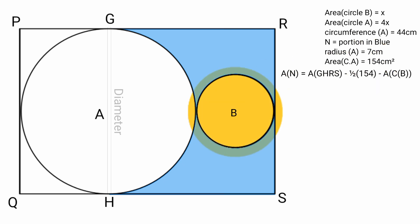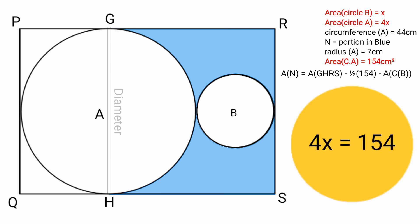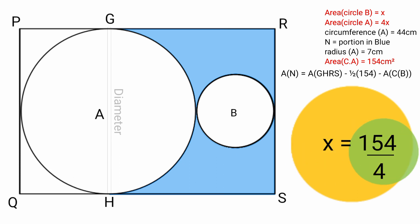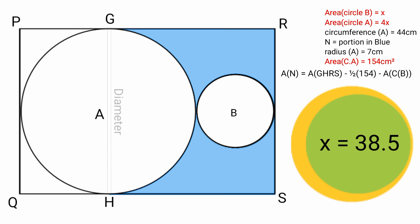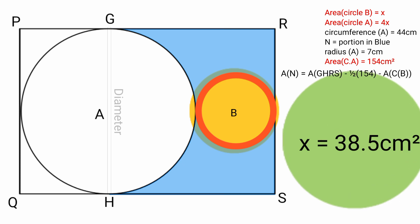Now for the area of circle B: we have area of circle B equal to x and area of circle A equal to 4x. Since area of circle A is 154, we equate 4x to 154. Dividing both sides by 4: x equals 154/4, which is 38.5. So the area of circle B is 38.5 centimeters squared.